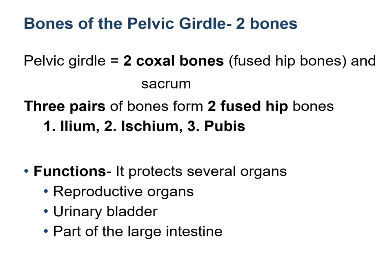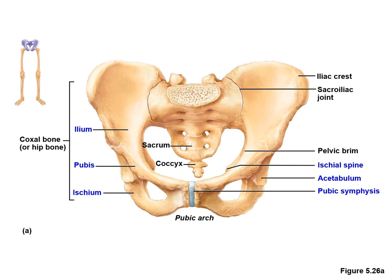The pelvic girdle is formed by the fusion of two coxal or hip bones and the sacrum. Each coxal bone is known as a hemipelvis, made up of three fused bones: the ilium, the ischium, and the pubis. The function of the pelvic girdle is to connect the lower limbs to the trunk, support the pelvic organs, and transmit the weight of the trunk to the legs. The opening into the pelvis is the pelvic inlet, and the ridge around it is the pelvic brim, which separates the superior greater pelvis from the inferior lesser pelvis.